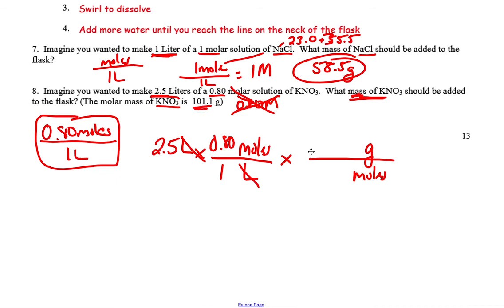But one mole is 101.1 grams of potassium nitrate. Moles cancels and you're left with grams, which is exactly what we want. So now it just comes down the math. 2.5 times 0.8 over 1 times 101.1 divided by 1 equals 202.2 grams. So there's your mass that you would add to the flask.